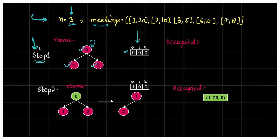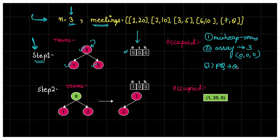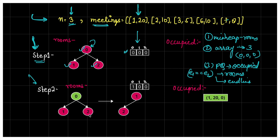Step 1: Meeting 1,20 arrives. All rooms are available, so we take room 0 from the top of the available heap, create a meeting object with start=1, end=20, room=0, add it to the occupied queue, and increment room 0's count. Step 2: Meeting 2,10 arrives. We check the occupied queue — the top meeting ends at 20, which is greater than start time 2, so room 0 is still busy. We take room 1 from available heap, schedule 2,10 in room 1, increment room 1's count.